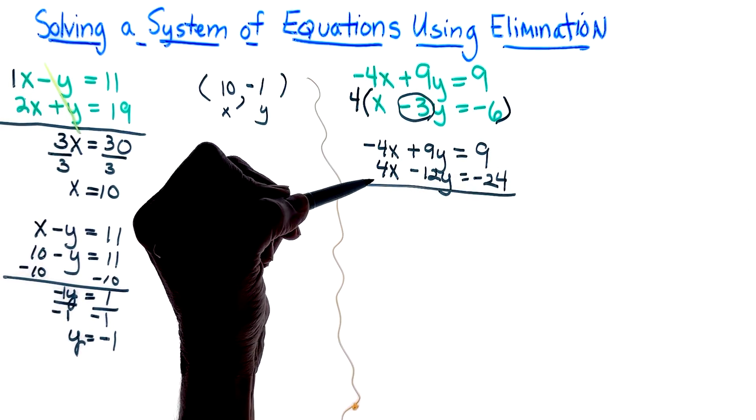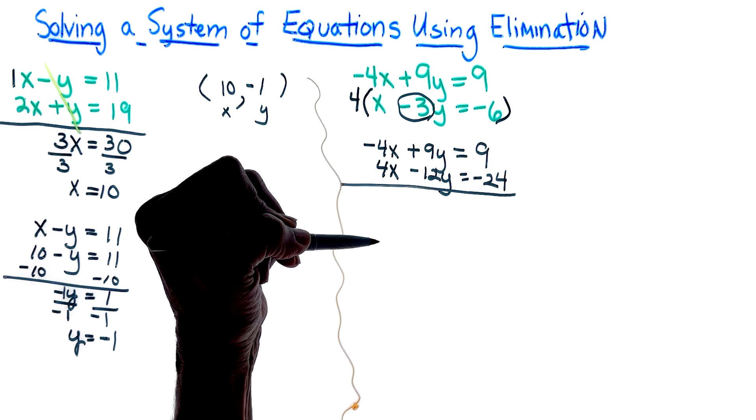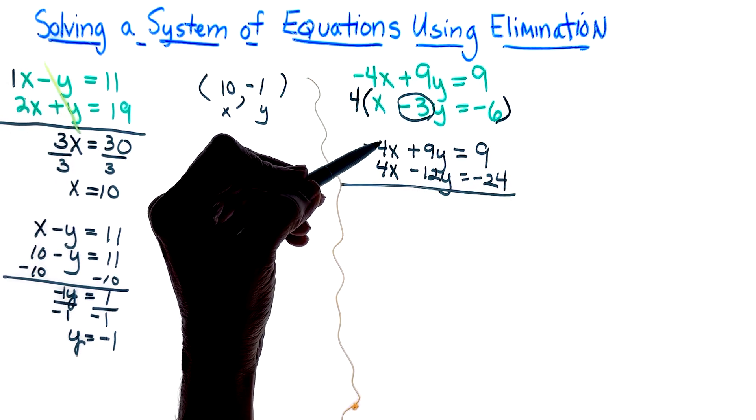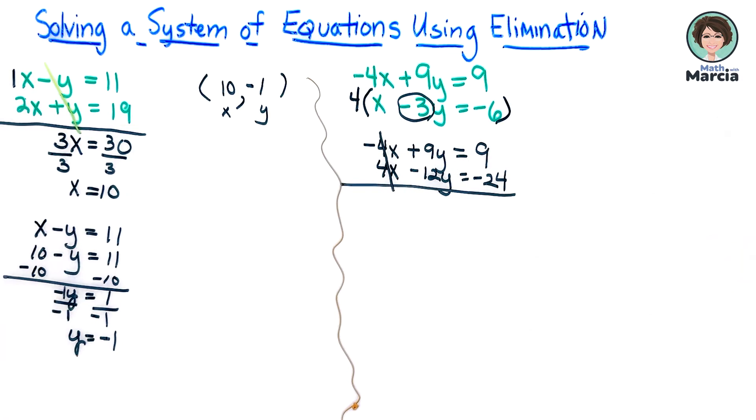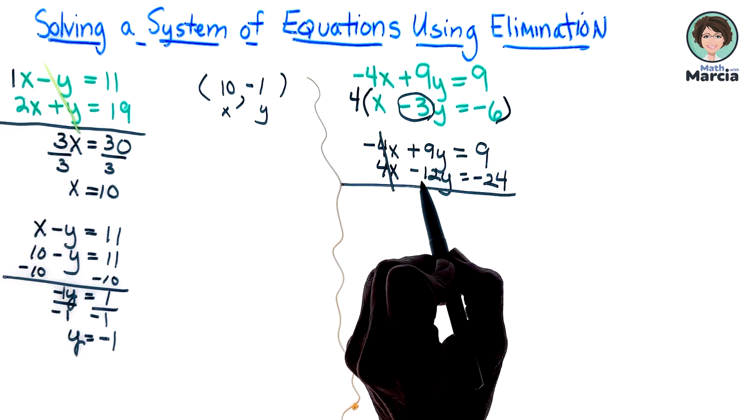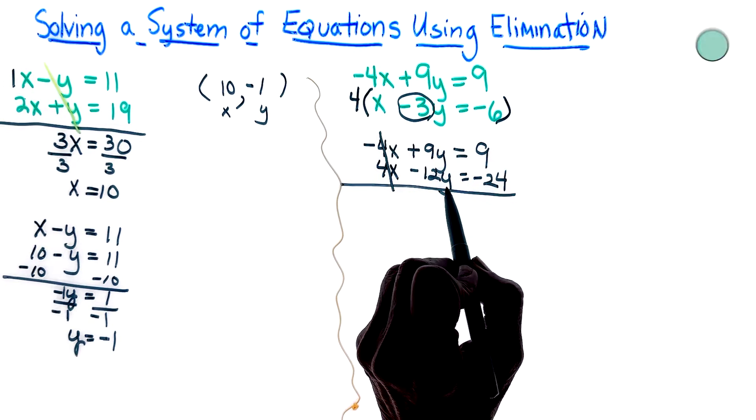So I see now that I'm ready to combine my columns because when I do, I'm going to go ahead and I am going to be able to eliminate my x's. So positive 9 minus 12y, and that was a positive 9y minus 12y.